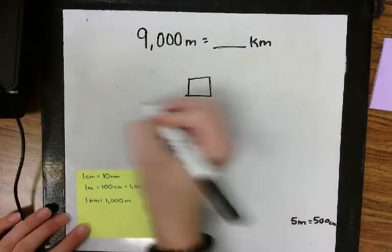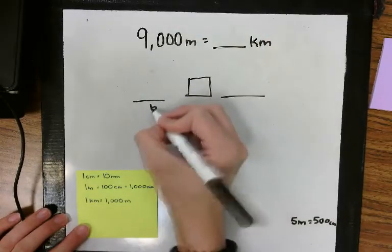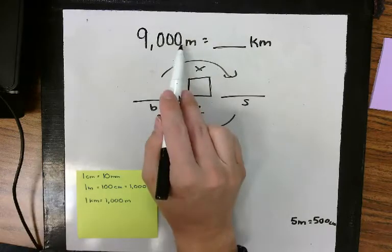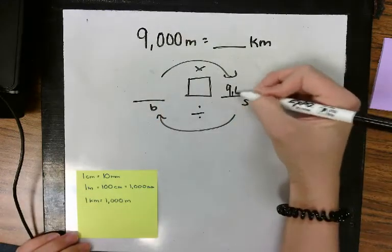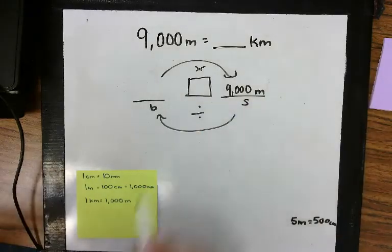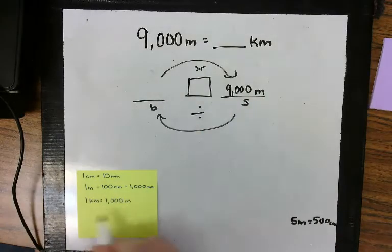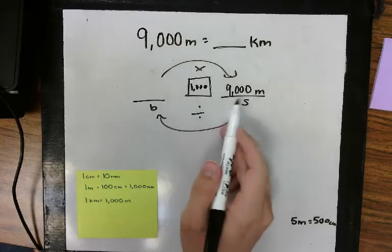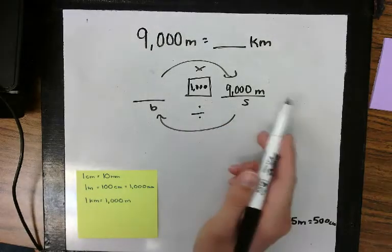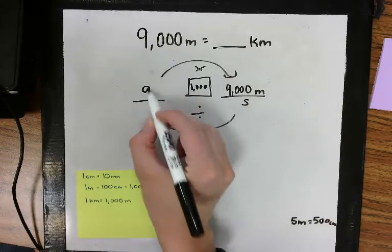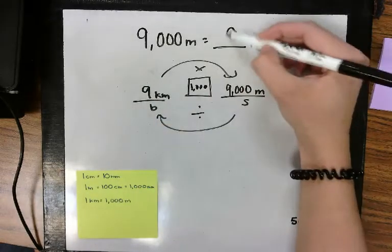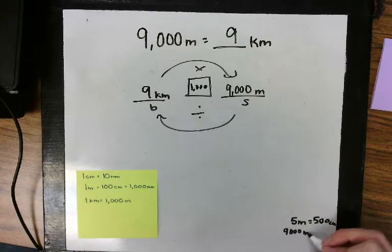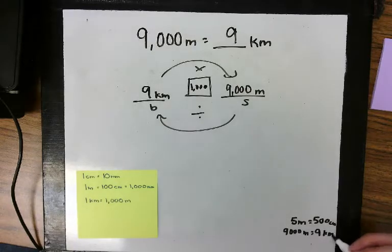So using our conversion calculator, meters are smaller than kilometers, so I'm starting here with 9,000 meters, and I'm wondering how many kilometers there are. There are 1,000 meters in one kilometer, so our basic unit is 1,000, which means I'm doing 9,000 divided by 1,000, which would give me 9.